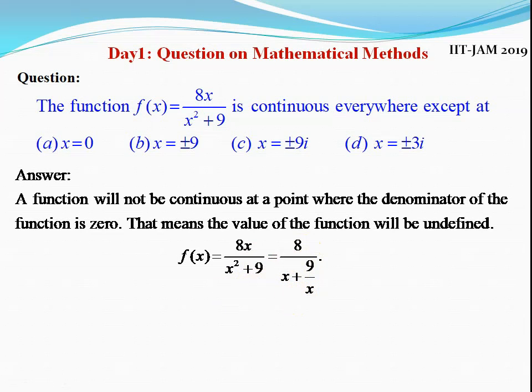Now the denominator is x plus 9 by x. The condition is the denominator will be zero, then the function will not be continuous. That is why we are doing this x plus 9 by x equal to zero.